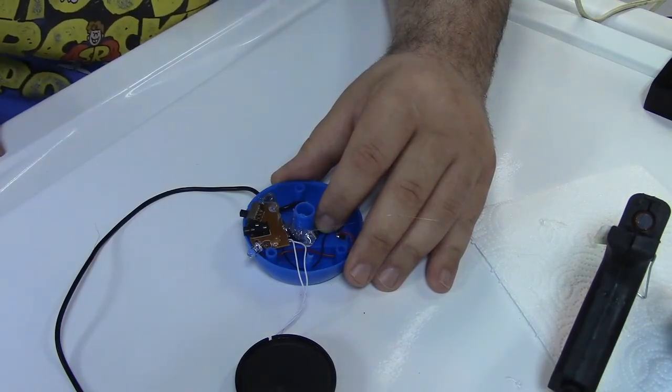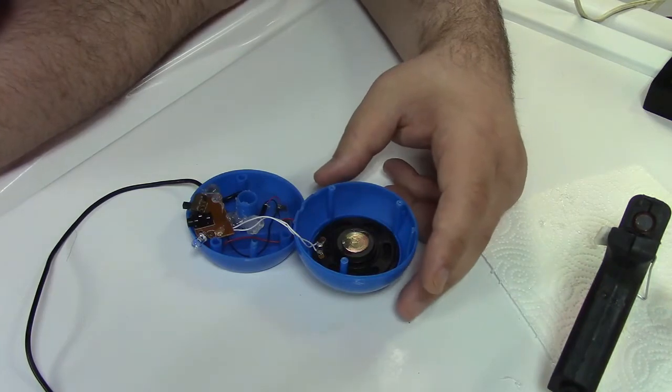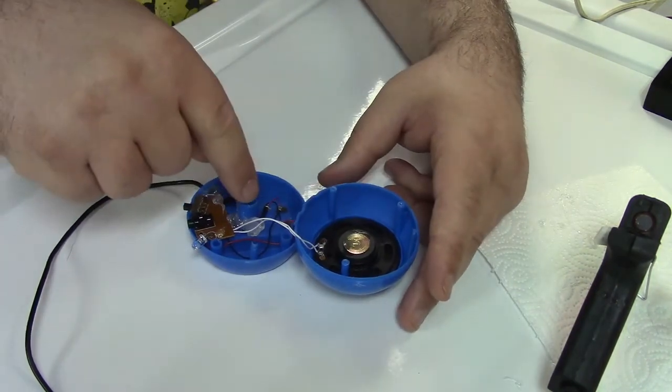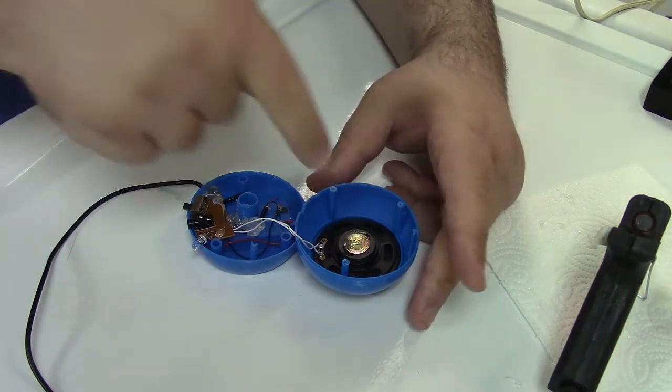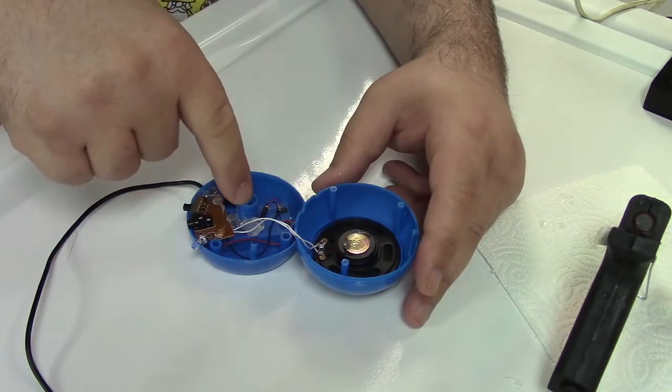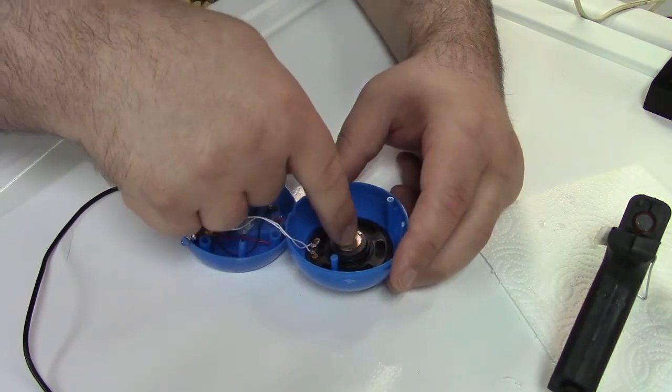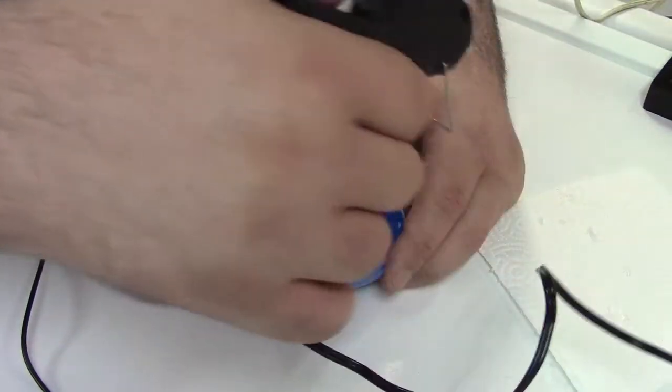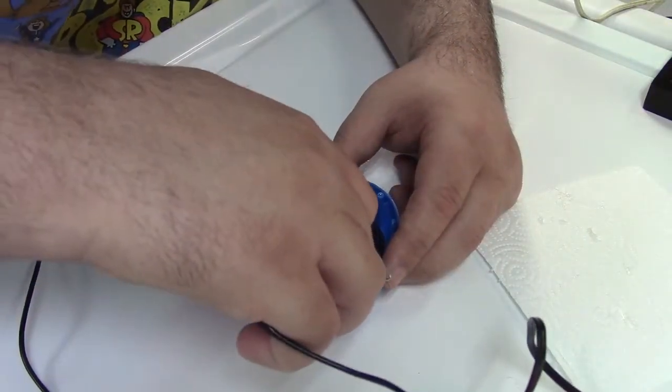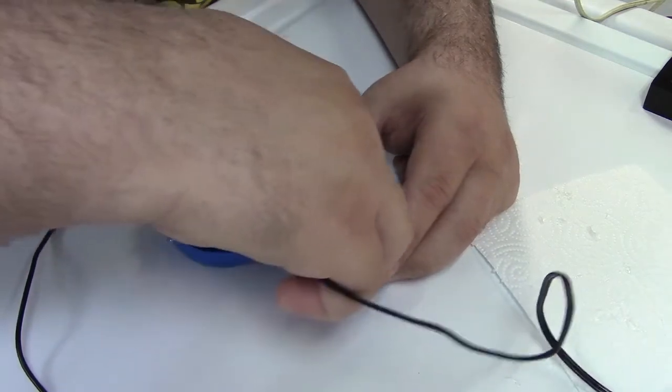And then we'll glue the speaker on and close her up. Okay we're all set here to glue the speaker in. I found that gluing it to the center post there is not really going to be the best. What I'm going to do is put a few dots of hot glue in here because it actually fits in the top part of the case a lot better. I don't have much glue left so we'll just put a couple of globs.